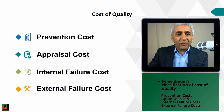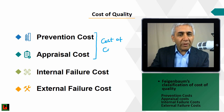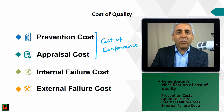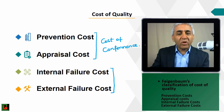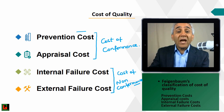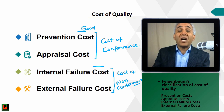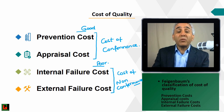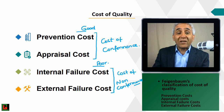The first two — prevention and appraisal — are costs of conformance, meaning the cost to ensure the product conforms to requirements. The second two — internal and external failure — are costs of non-conformance. Prevention and appraisal can also be called the cost of good quality, while internal and external failure are the cost of poor quality.